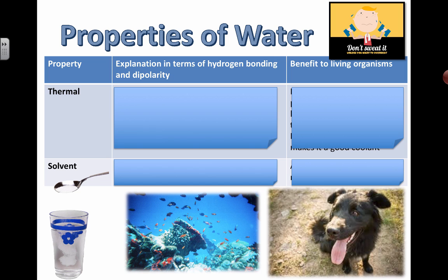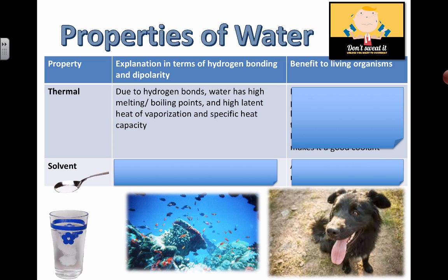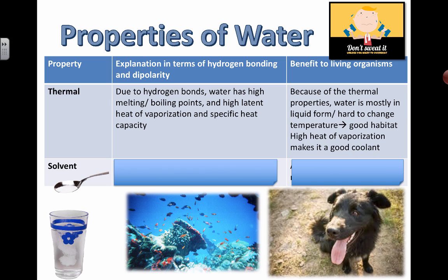Another property of water is its thermal property. Thermal has to do with heat energy. Once again, hydrogen bonding comes to the rescue. Because of hydrogen bonding between water molecules, it ends up having a very high melting and high boiling point. Also, because of the hydrogen bonding, it has something called high latent heat of vaporization and specific heat capacity.